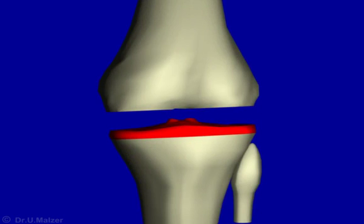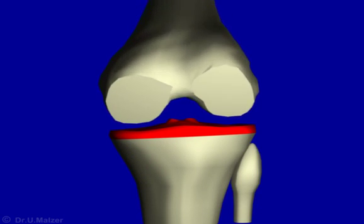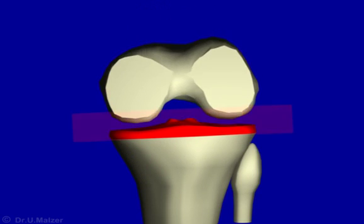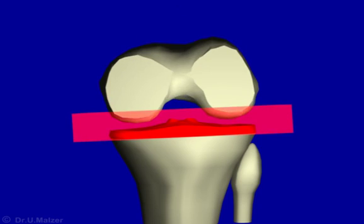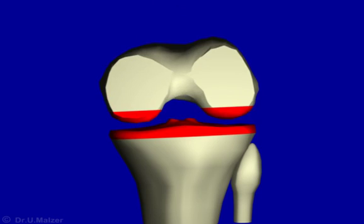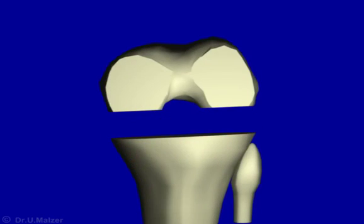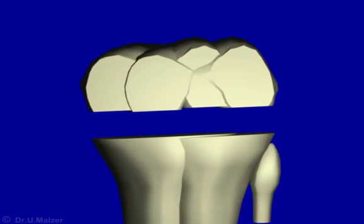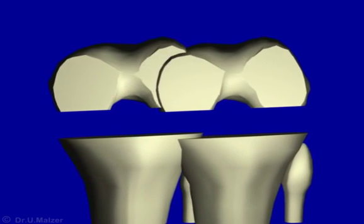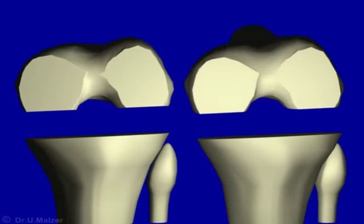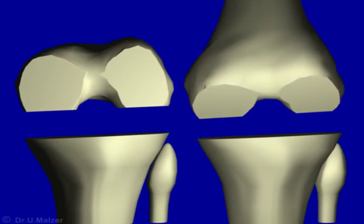In the femur, this applies in flexion and in extension — in other words, the same thickness of bone will be removed everywhere. Since a uniform thickness of bone is removed to match the thickness of the implant, the knee replacement should be well balanced in flexion and in extension.